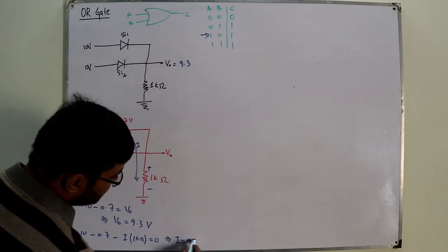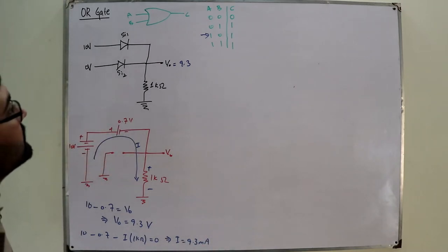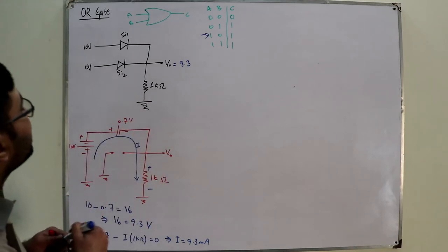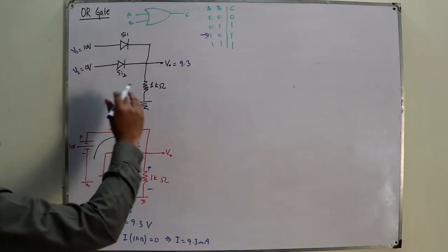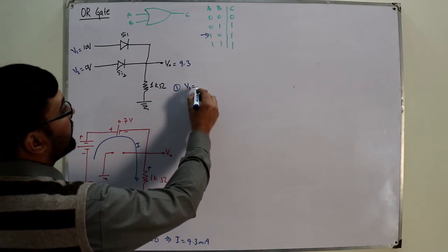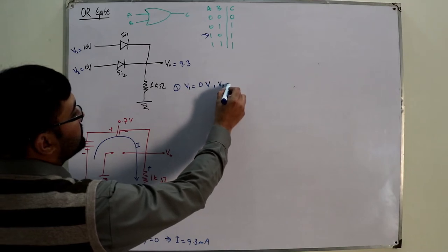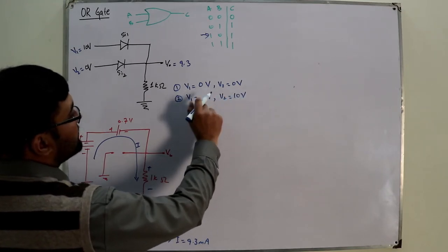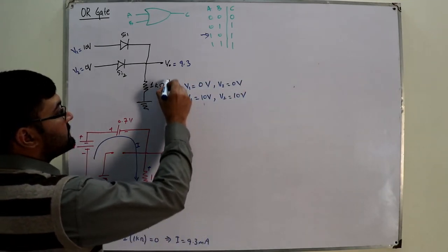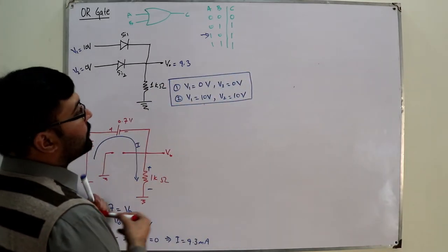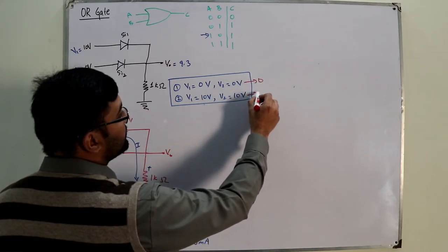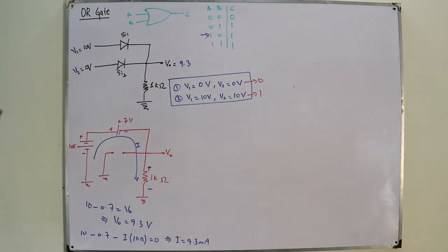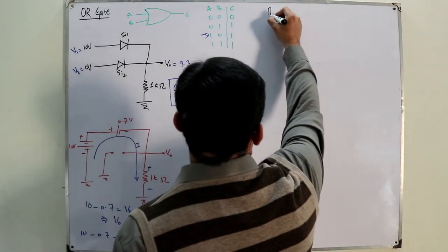I have done the analysis for one input high and the other input low. Take the rest of the cases as homework. If this is V1 and this is V2: question one — V1 equals 0 volts and V2 equals 0 volts (both inputs low); question two — V1 equals 10 volts and V2 equals 10 volts (both inputs high). Find the output in each case. From the truth table you should get 0 for both low and 1 for both high. Let me know in the comments if this is a proper OR gate.